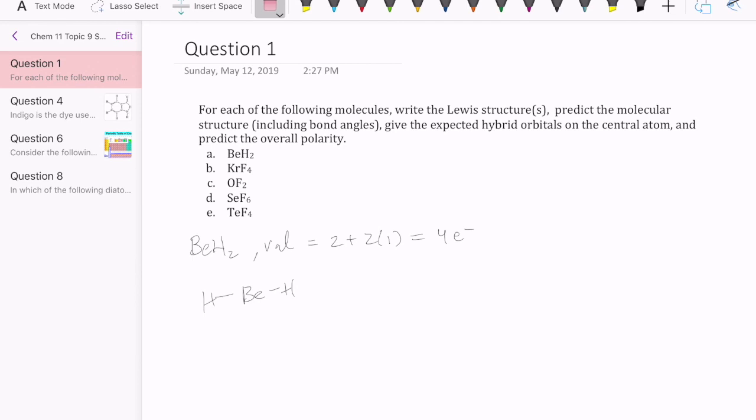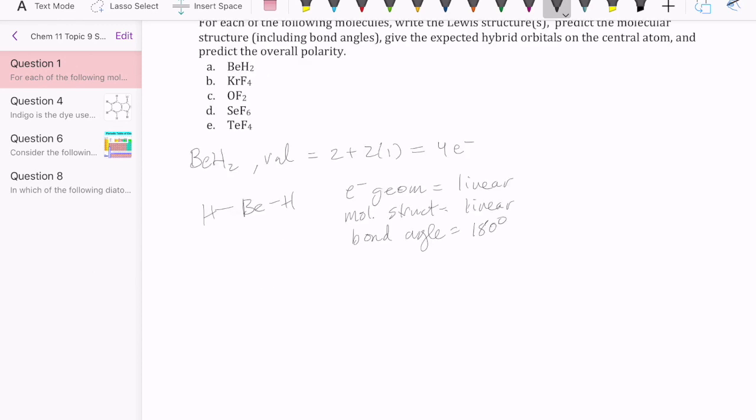We're going to add some information here for the electron geometry. This has two pairs of electrons, so that's going to be a linear geometry. The molecular structure, since both pairs are bonding, is also going to be linear. Bond angle that goes with that is 180 degrees. Each electron geometry has a specific hybrid orbital that goes with it. So in the case of a linear electron geometry, the hybrid orbital will be sp. And then lastly, polarity is just a function of whether the bond vectors will cancel each other. And in this case they do, so this molecule will be nonpolar.